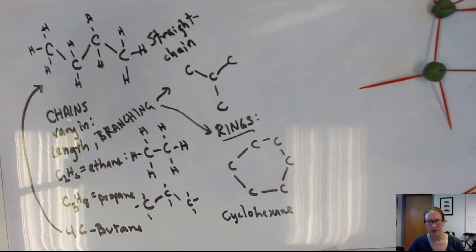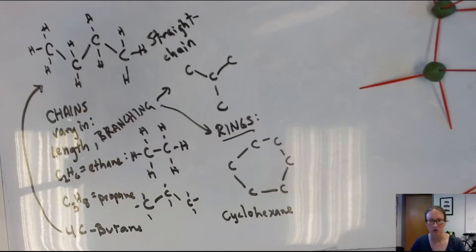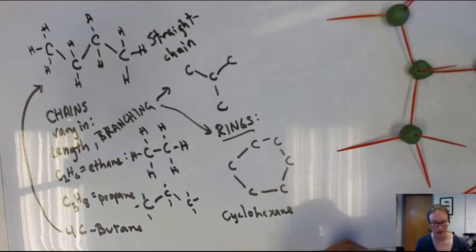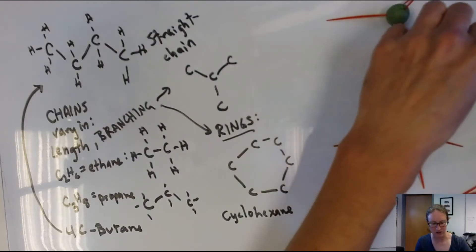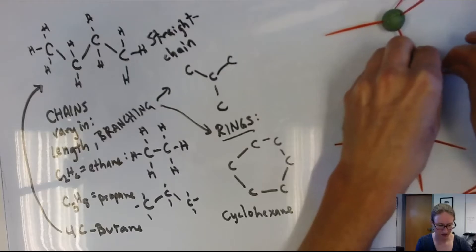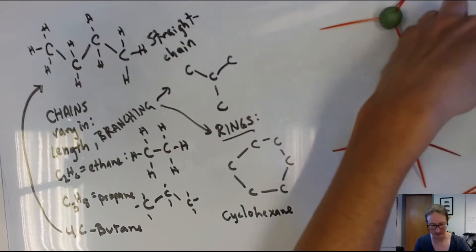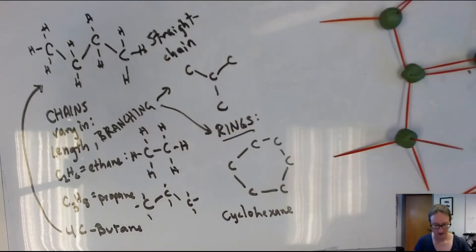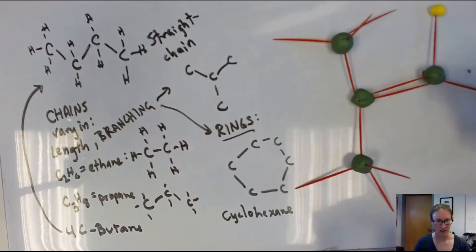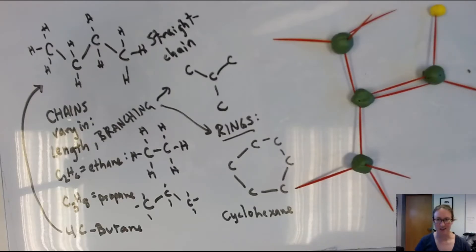Next, in the overview video I talked about another possibility: two carbon atoms could also share more than just a single pair of electrons. So for example, if they share two pairs of electrons — here's where the modeling clay is slightly less than ideal — now they're sharing two pairs of electrons, so we've got four pairs for the carbon on one side and four pairs on the carbon in the center. So now what we've got here is a double bond.